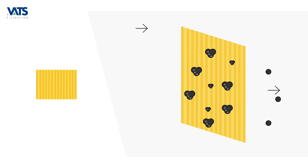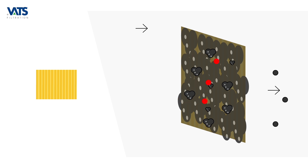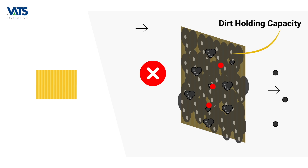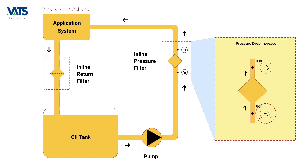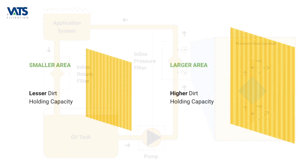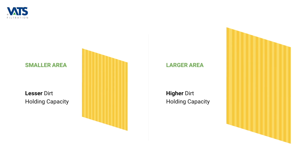As the holes on the mesh start getting used up by particles, lesser and lesser area is available for further flow, and eventually the sheet will get completely clogged, stopping the flow altogether and rendering it useless. The amount of dirt retained at this point is its maximum dirt holding capacity. However, in reality, the pressure drop across the filter starts increasing as the filter gets progressively clogged, and when the pressure drop is excessively high, the process needs to be stopped and the filter replaced.